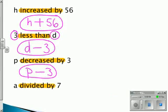And finally, the last one we have divided by. Whenever you see divided by in algebra, you don't use the divided by sign anymore. You put a division line, and your answer is a over 7, or a divided by 7.